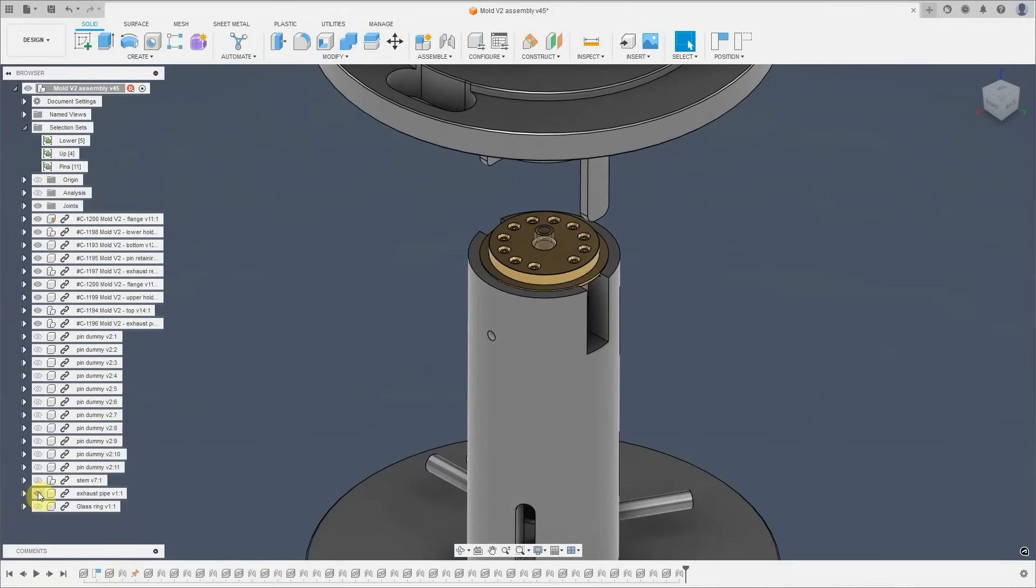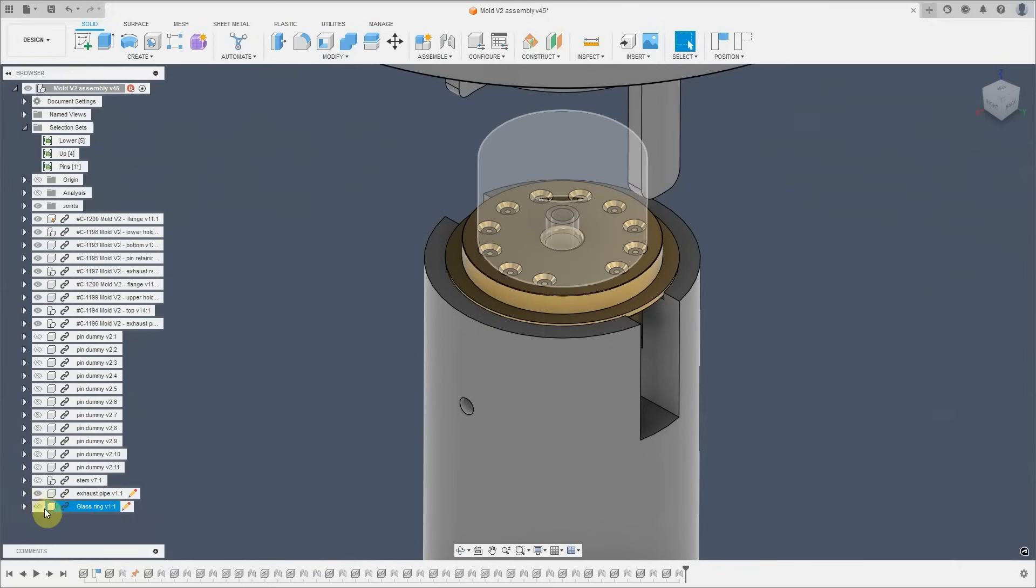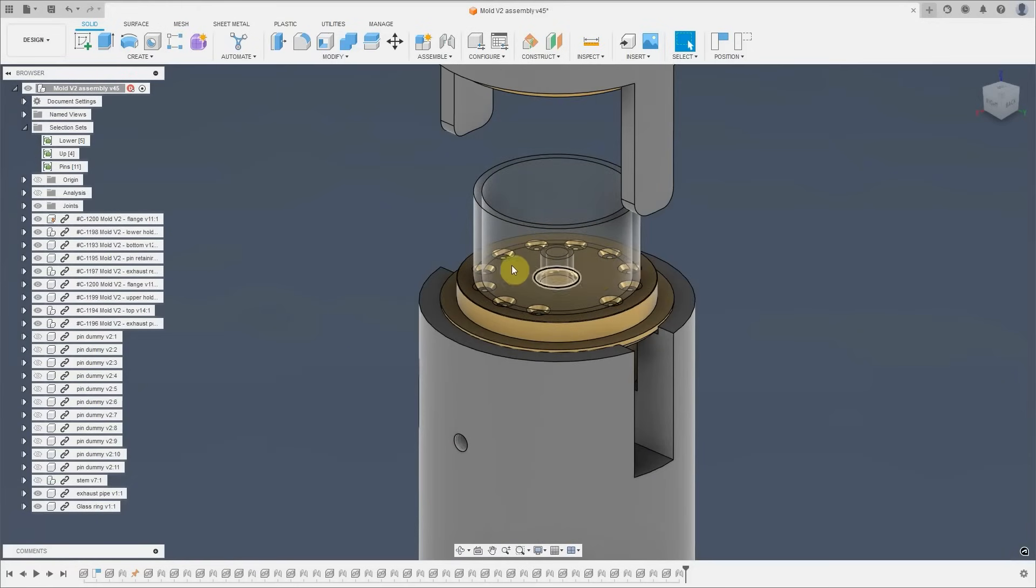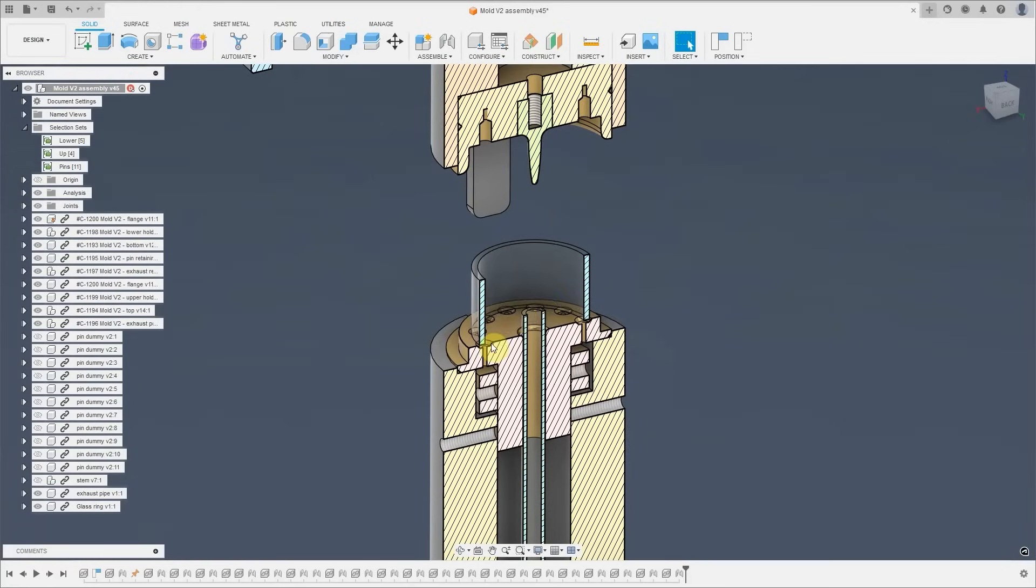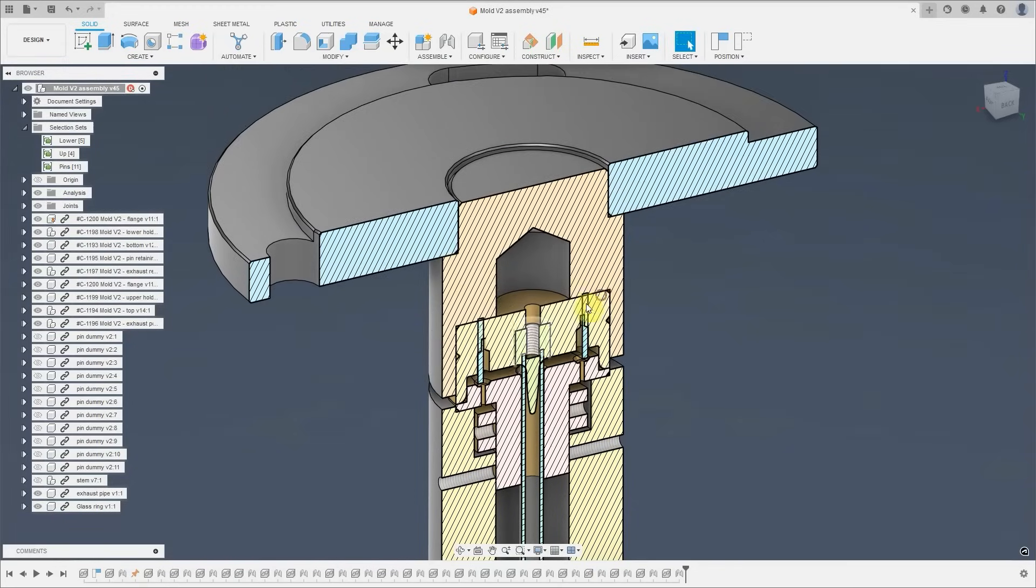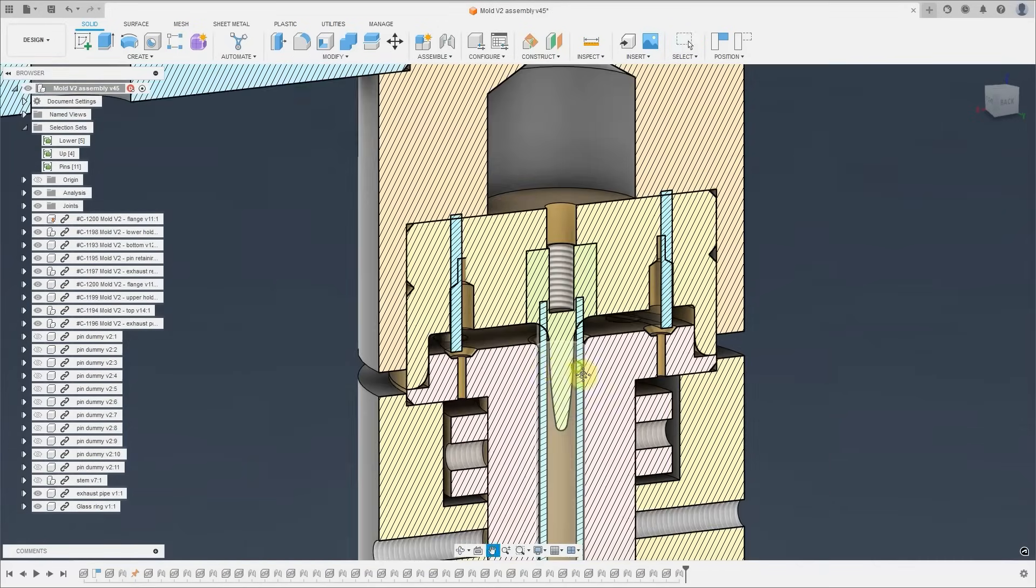First we will insert an exhaust pipe, a glass pipe here. Then we will put a glass ring around the pins and start heating it. Once the glass is molten, we'll push this upper part down and squeeze the glass into the cavity of the mold and press it into the form of the stem.